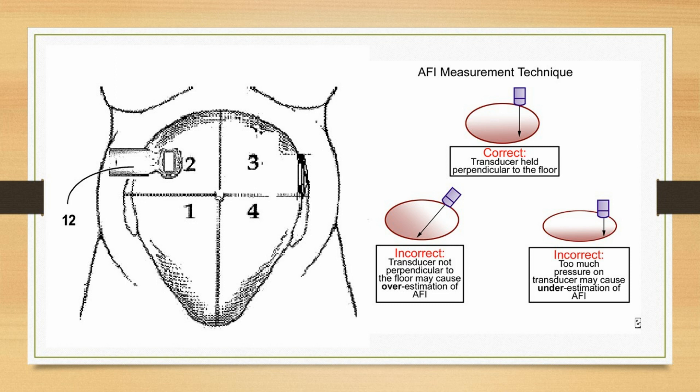The right-sided image shows the measurement technique for AFI. When we place the probe, the transducer should be held perpendicular to the floor, which will give a correct measurement. If the transducer is held at an angle or is not held perpendicular to the floor, there may be overestimation of the AFI. If too much pressure is applied, it can cause underestimation of the AFI.